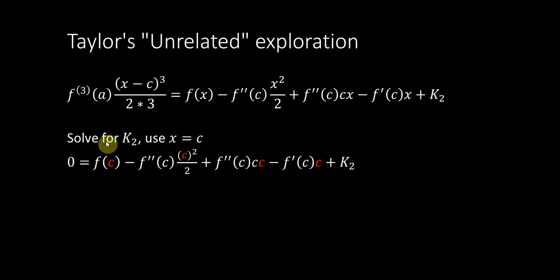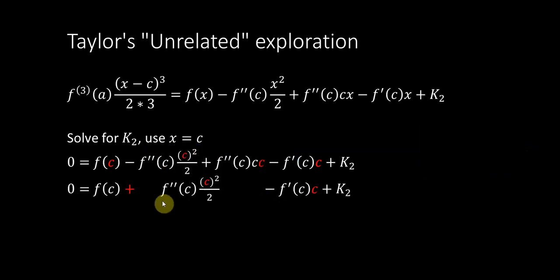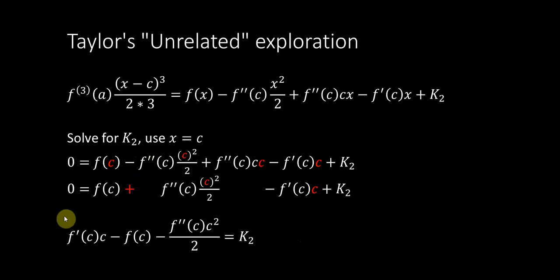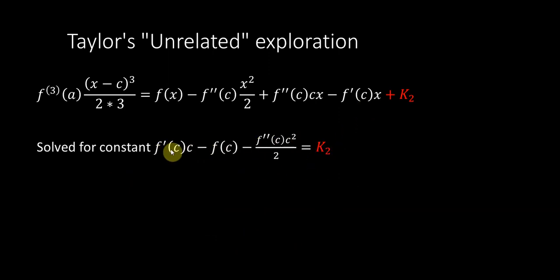We use K2 by setting x equal to c, and solve. The left side goes to zero; on the right side all the x's turn into c's. Notably, two middle terms are actually like terms — f double prime times c squared appears with a negative one-half coefficient and a positive one coefficient — so they reduce to positive one-half. Pushing everything to the left side gives us the value of K2 as our constant of integration.